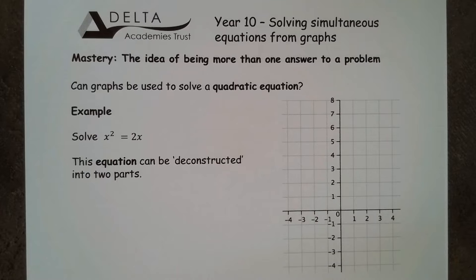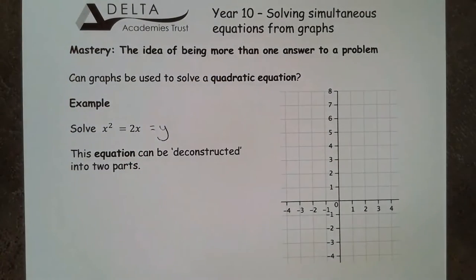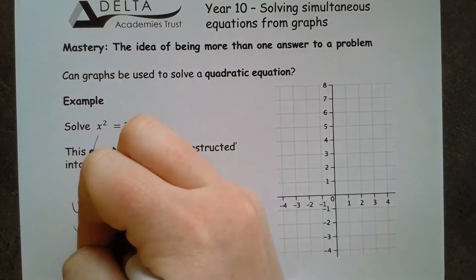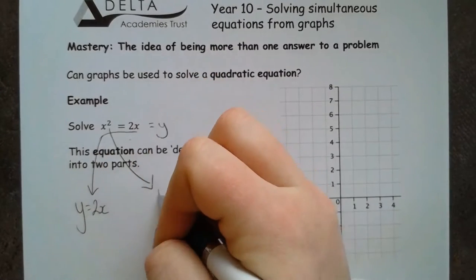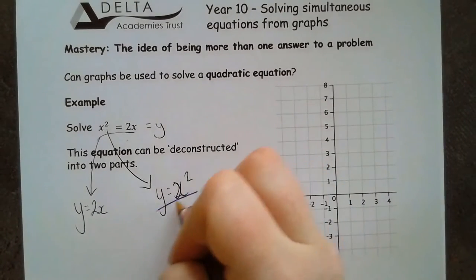We're going to start by having a look at solving quadratic equations. A quadratic equation is one where I've got an x squared in there. What we're going to do is use that same method as last time and deconstruct this equation into two parts. I'm going to say that both of these are equal to y to allow me to draw the graph. So I've got y equals 2x and y equals x squared.